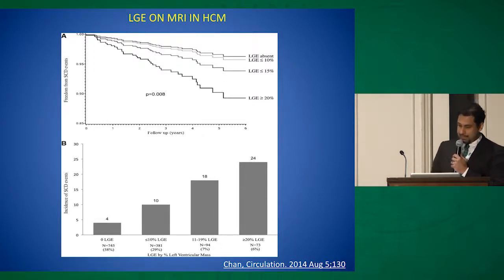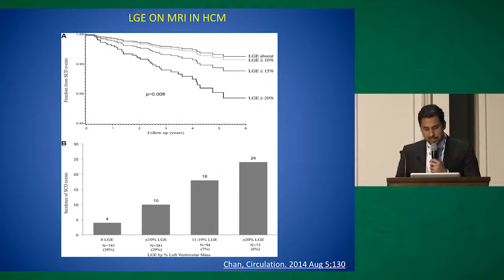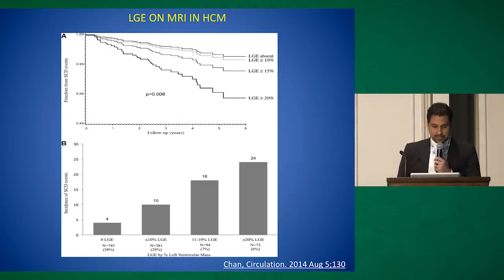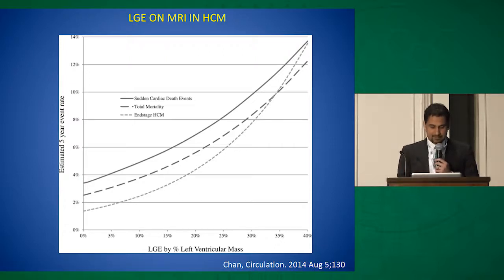As the amount of LGE increases, your event rate goes up. A late gadolinium enhancement of 15% of LV mass demonstrated a two-fold increased risk even in the absence of other risk factors. It's not just arrhythmic events — more LGE also correlates with higher rate of progression to end-stage cardiomyopathy and total mortality. So a cutoff around 15% may indicate that even low-risk group patients benefit from ICD, even in the absence of other risk factors.